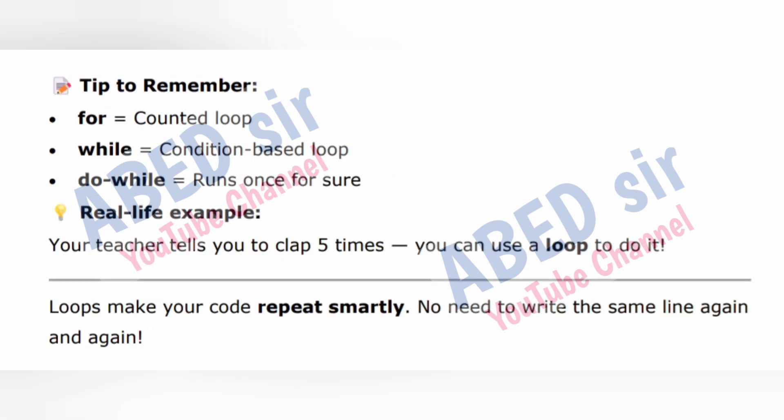Tip to remember: for = counted loop; while = condition-based loop; do-while = runs once for sure. Real life example: your teacher tells you to clap 5 times — you can use a loop to do it. Loops make your code repeat smartly; no need to write the same line again and again.